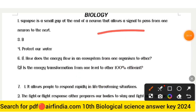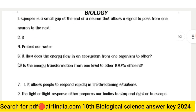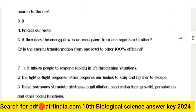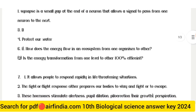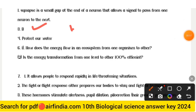Subscribe our channel for all papers of Class 10th. Your first answer: Synapse. Synapse is a small gap at the end of a neuron that allows a signal to pass from one neuron to the next.